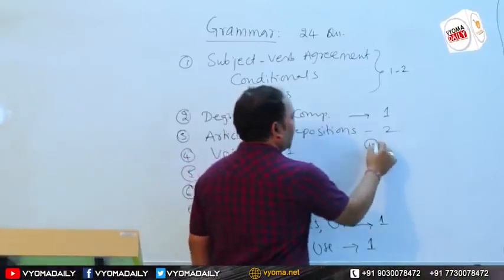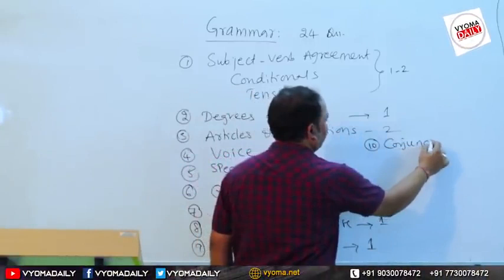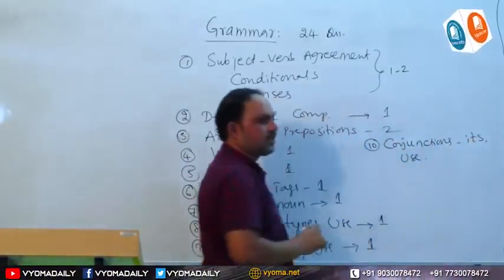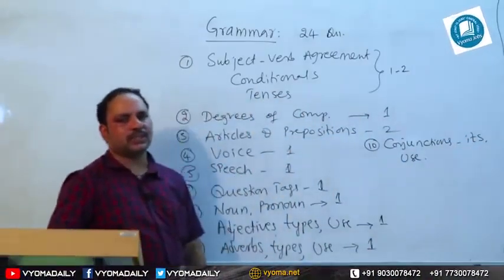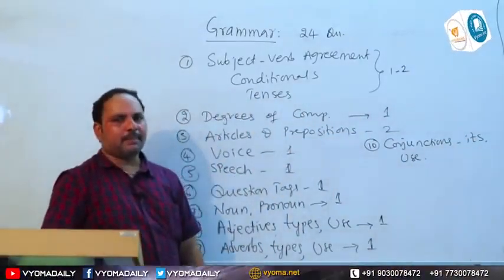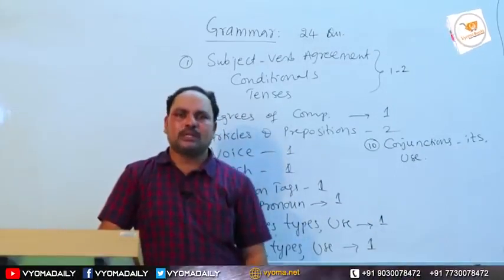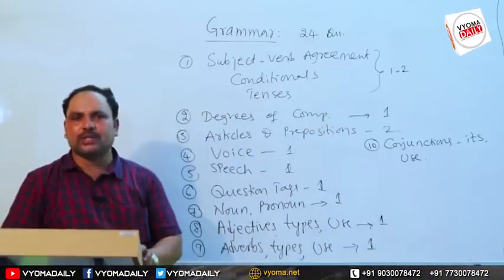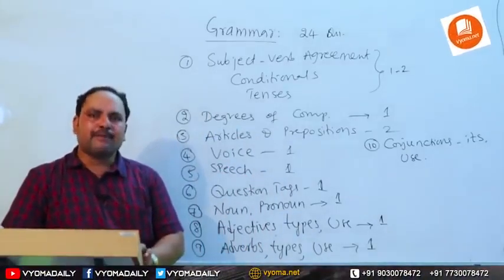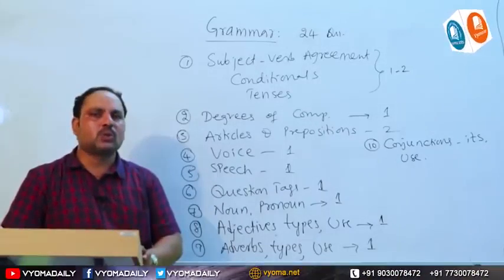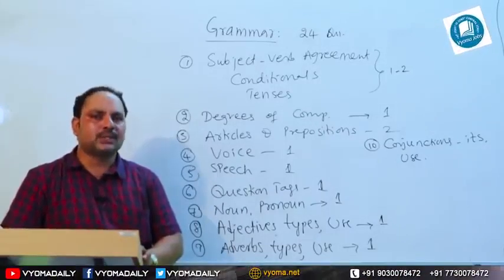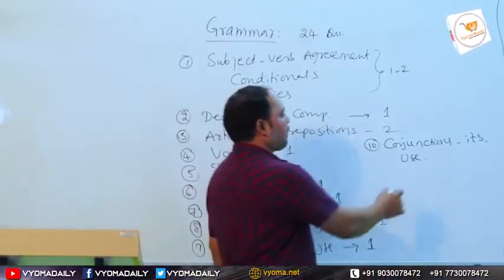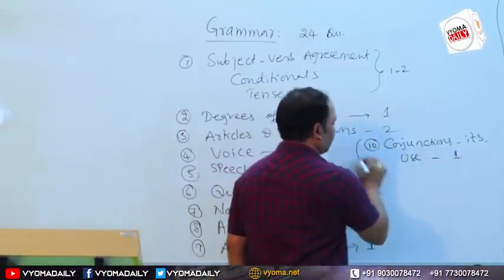The tenth topic is conjunctions — its types and correct use. We need to know what a conjunction is and the different types, such as coordinating conjunctions, correlative conjunctions, and subordinating conjunctions, and how to use them appropriately. One question is asked from conjunctions.